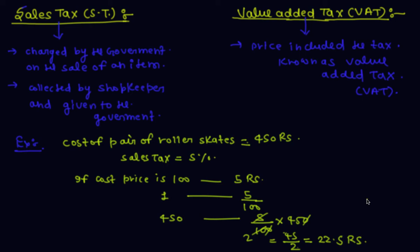So this is the sales tax calculated in this numerical. Now, bill amount equals cost price of 450 plus sales tax of 22.5, which equals 472.5 rupees. So this is the question on sales tax.